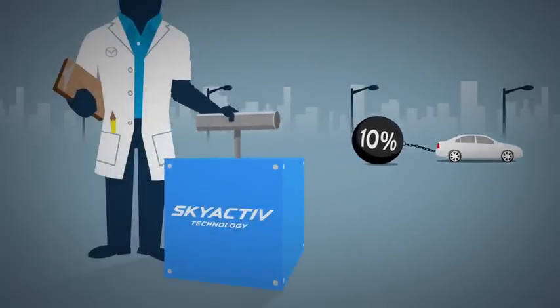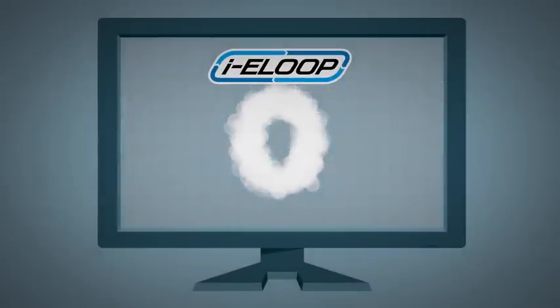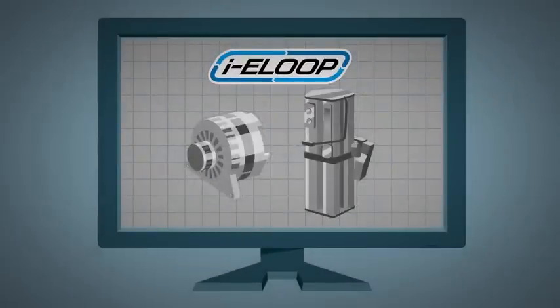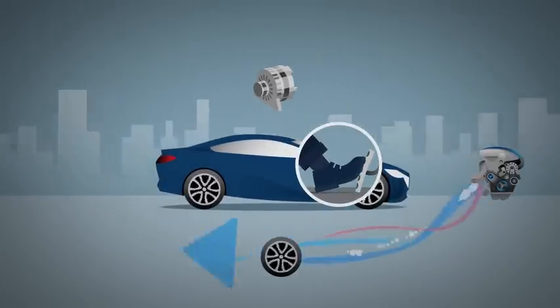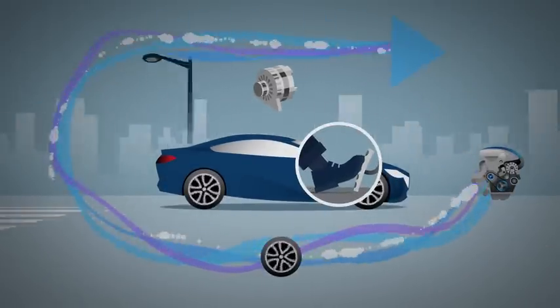But we invented a way to reduce that to zero. i-ELOOP, a regenerative braking system that recovers wasted energy. It uses a special alternator that freewheels when the engine moves the car. But the moment you let off the gas, it wakes up to turn outgoing energy into electricity.